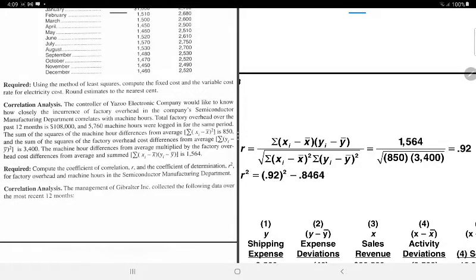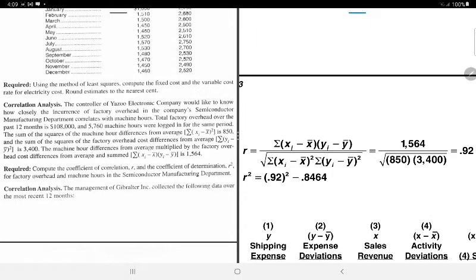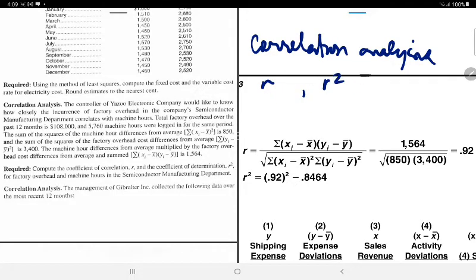So students, we will be discussing correlation. In correlation analysis, what do we need to determine? Coefficient of correlation and coefficient of determination. Now, what does the correlation coefficient indicate? It's either positive, negative, or zero.